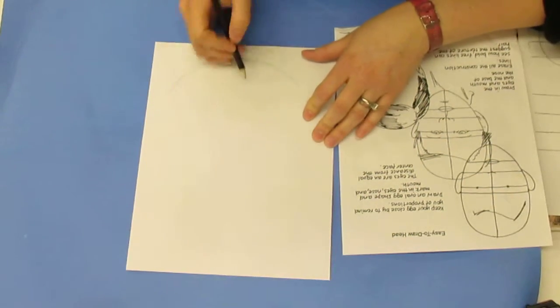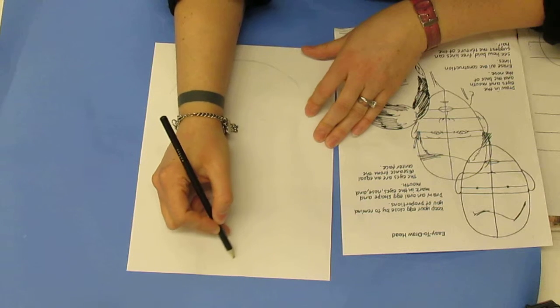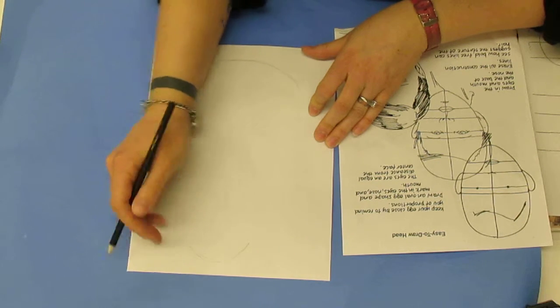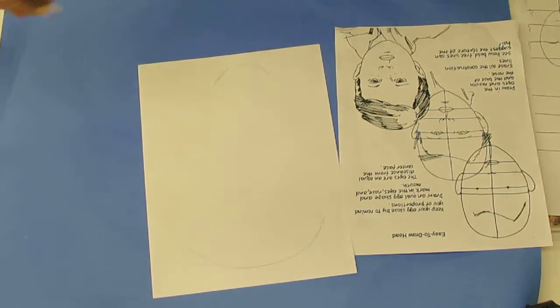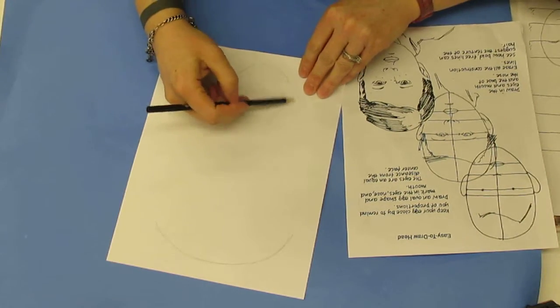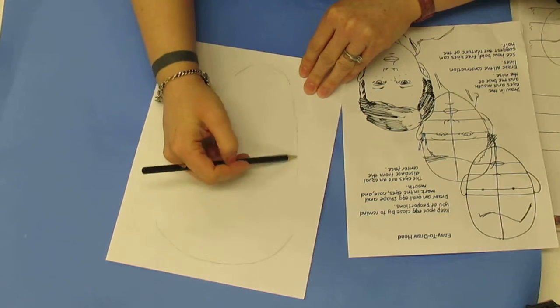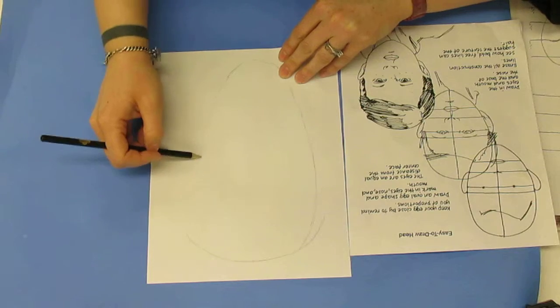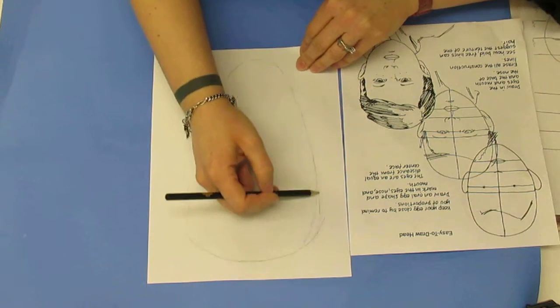And then flip your paper around. Draw a narrow rainbow beneath that. This will be your chin. Then, once right side up, you can gently connect the two, adjust as needed.